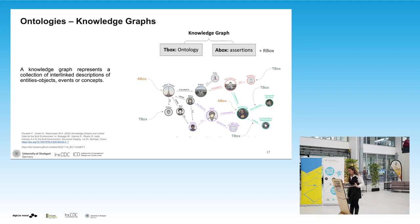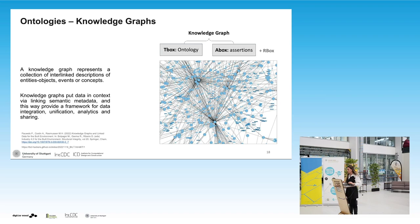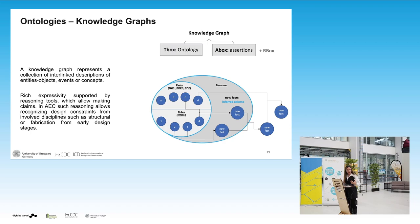We can define a knowledge graph as a collection of interlinked descriptions that put data in context, link metadata with each other, and provide a framework for data integration, unification, and analytics. What is very powerful about knowledge graphs is the reasoning — if we say every human is mortal, we can infer new knowledge. We can add new rules or different information that will help us infer new facts, which then might infer something else. We start with simple data but end up with a lot of information we might not have been aware of, because it comes from different disciplines and requirements.